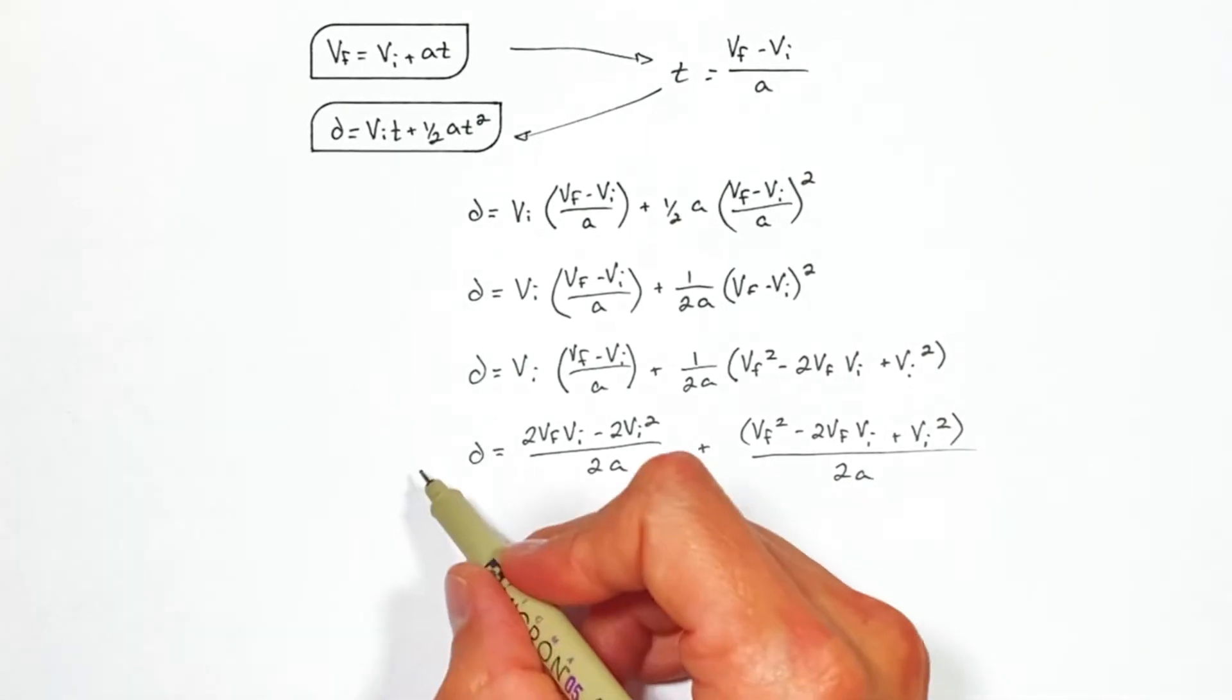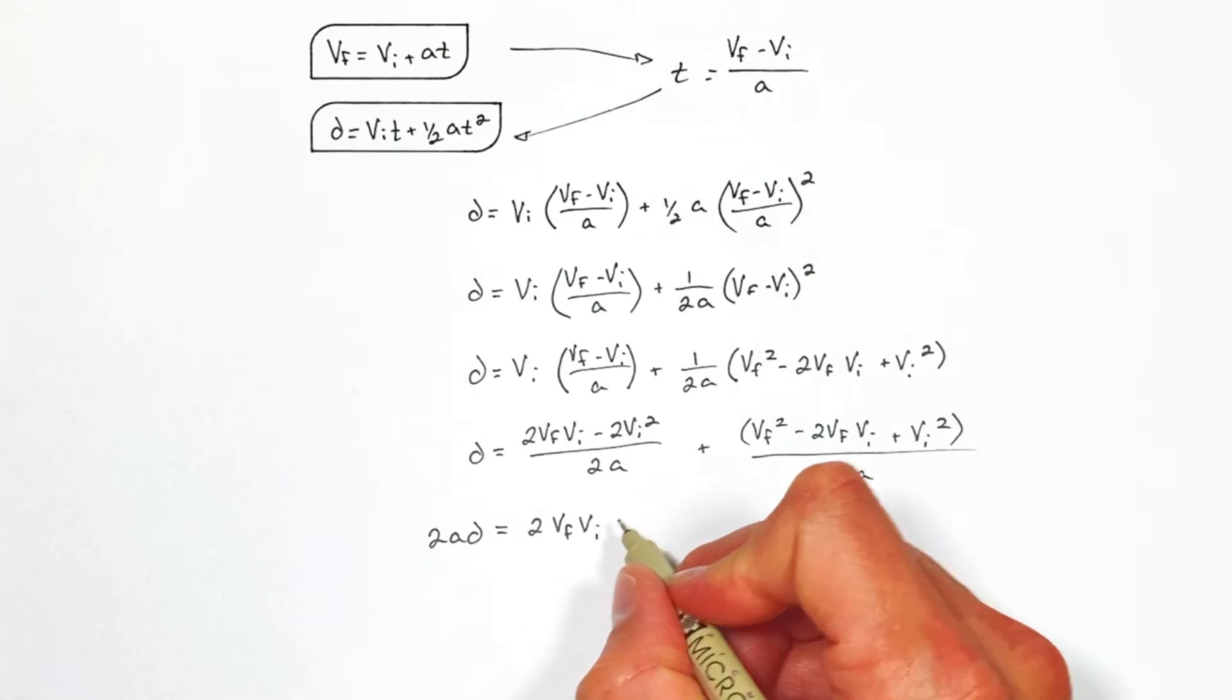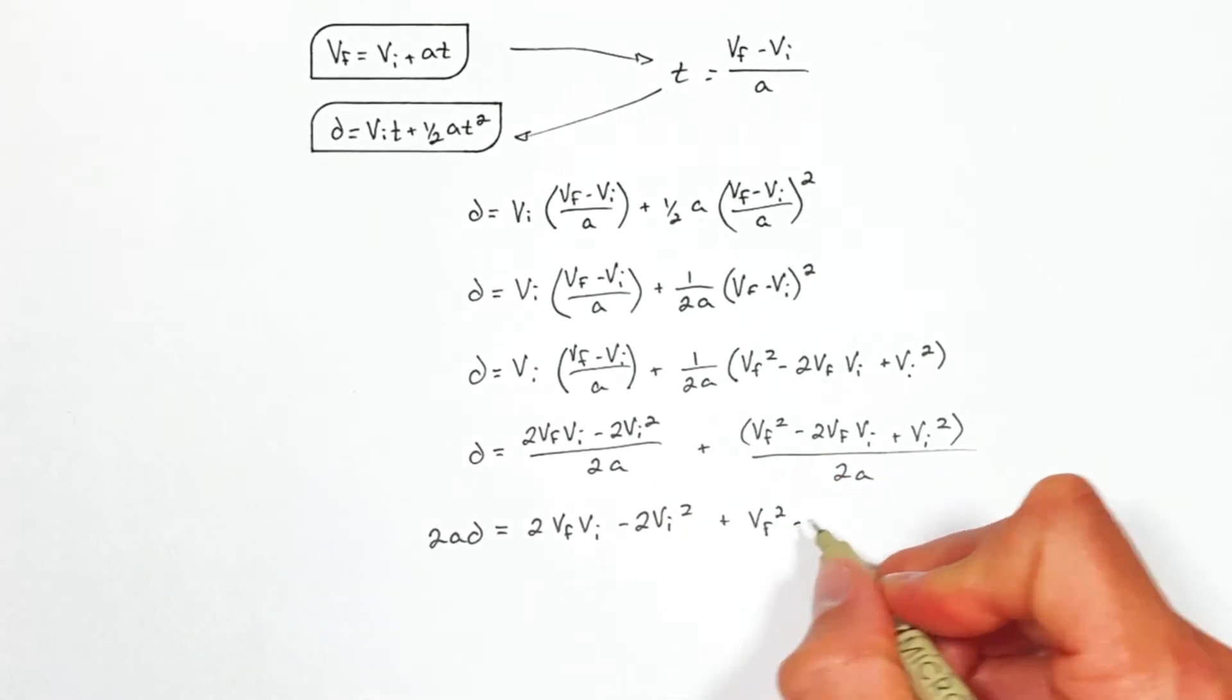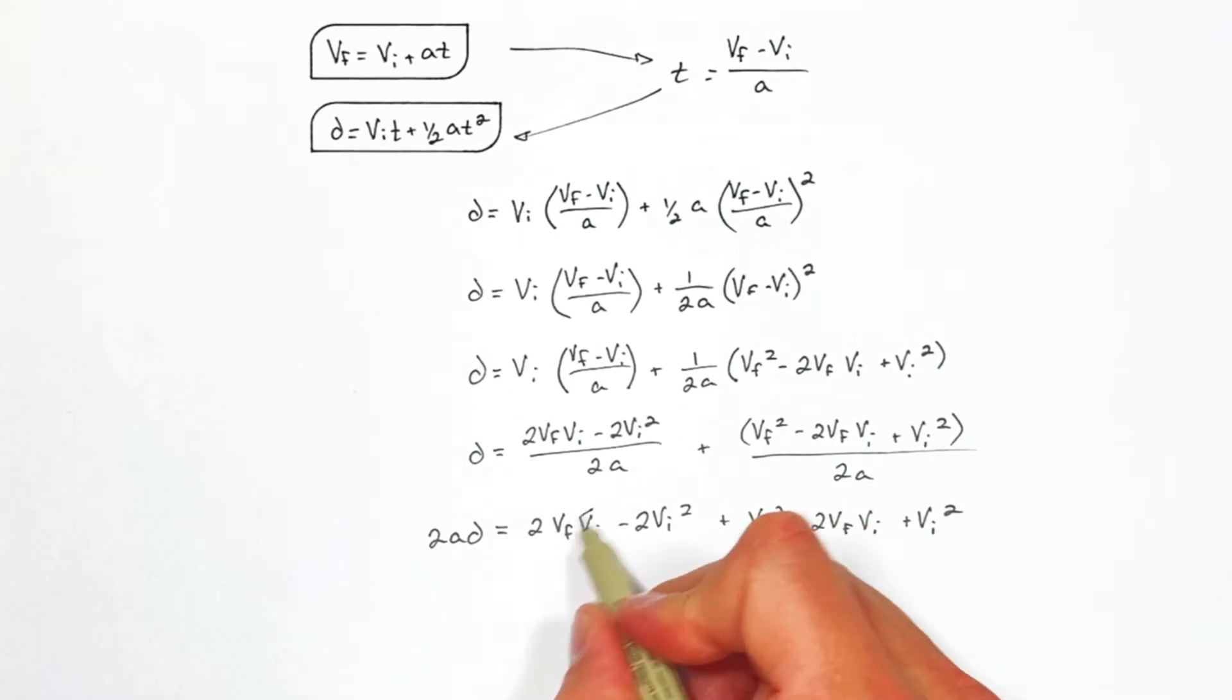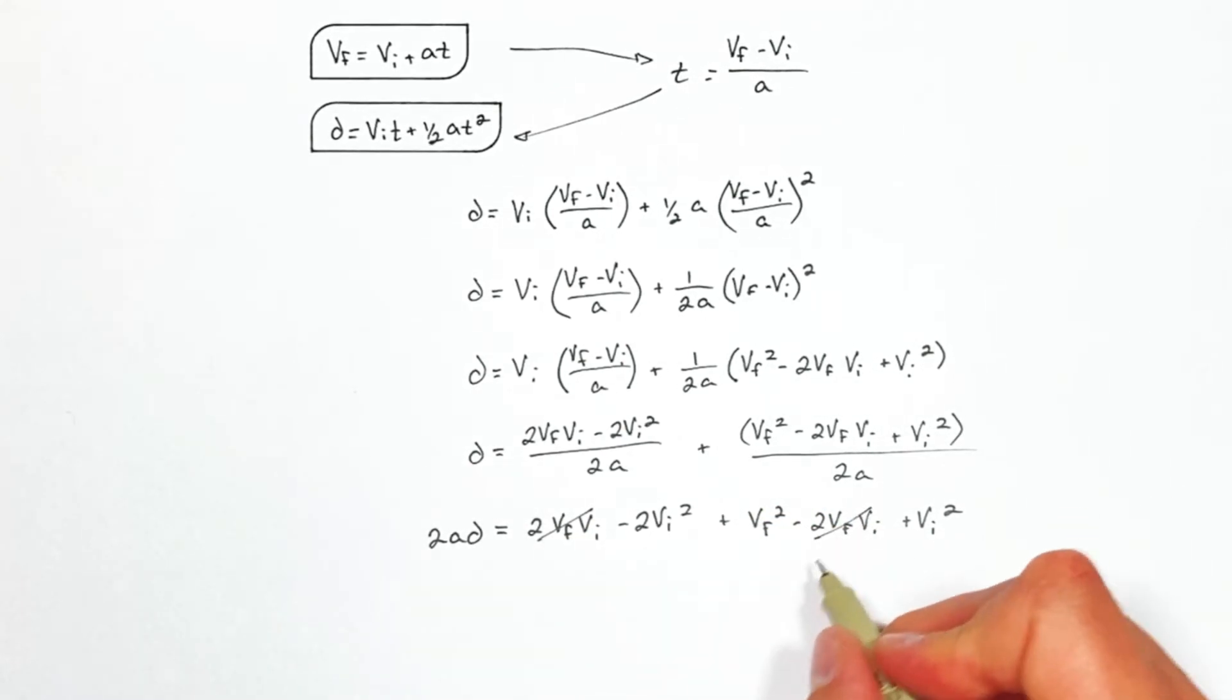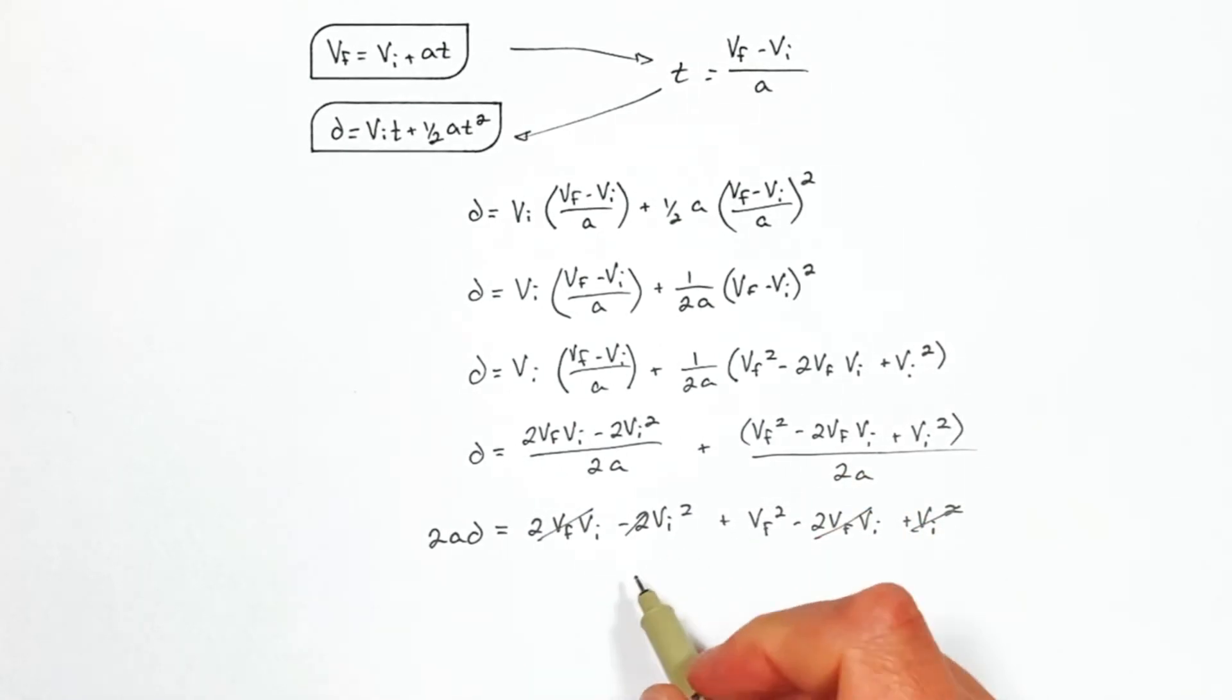And pulling the 2A over to this other side, you'll see some of these terms cancel out. This 2VFVI cancels out over here, really subtracts out to zero. And this negative 2VI squared is going to get rid of that term, and we're left with just negative VI squared.